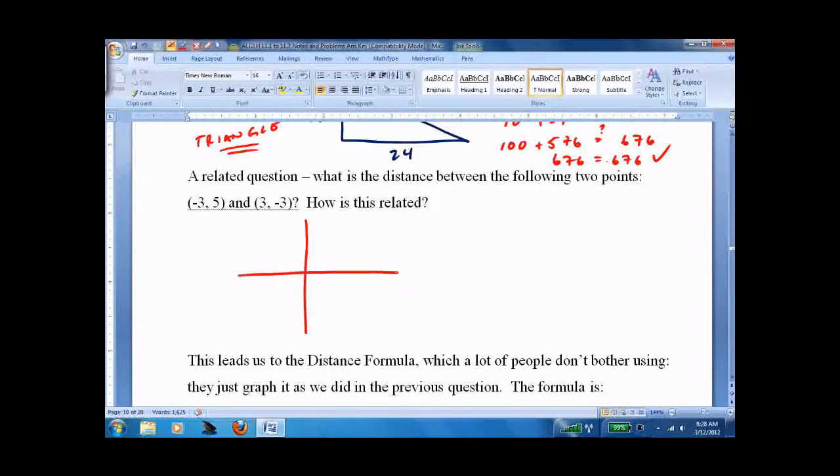How far is it between the point negative 3, 5 and 3, negative 3? Whatever you draw in your points, make sure you label them. So, here's the point 3, negative 3. Here's the point negative 3, 5. What is this distance? How the heck would we find out? Well, if we had a right triangle, we'd just use Pythagorean theorem.